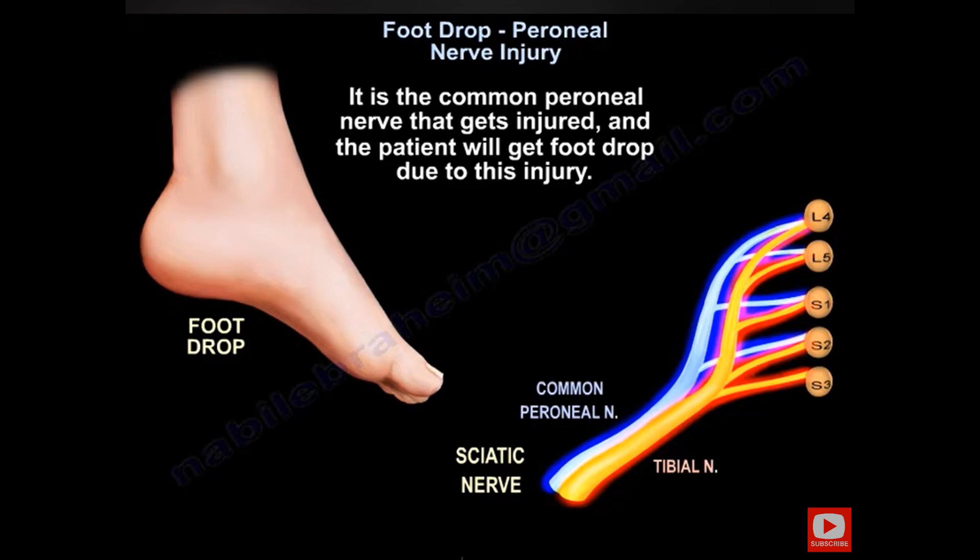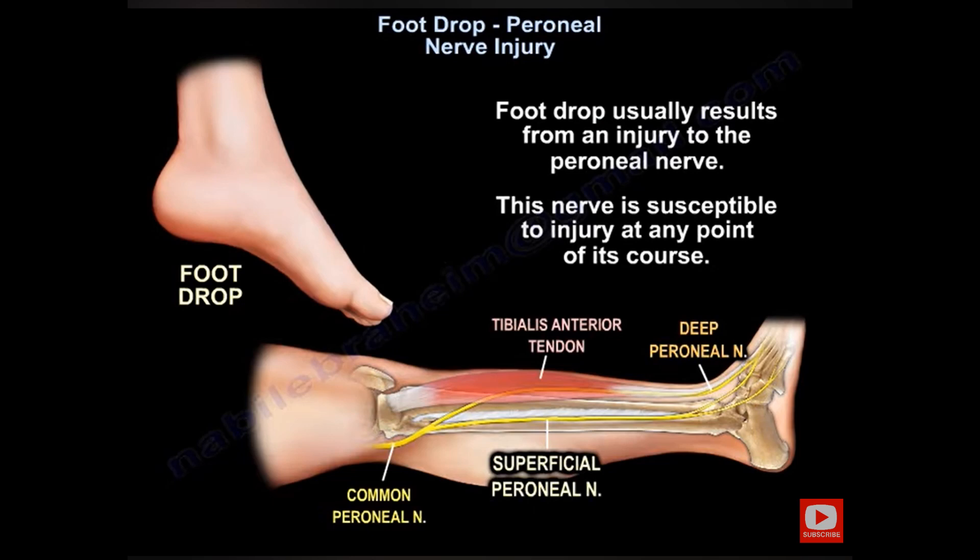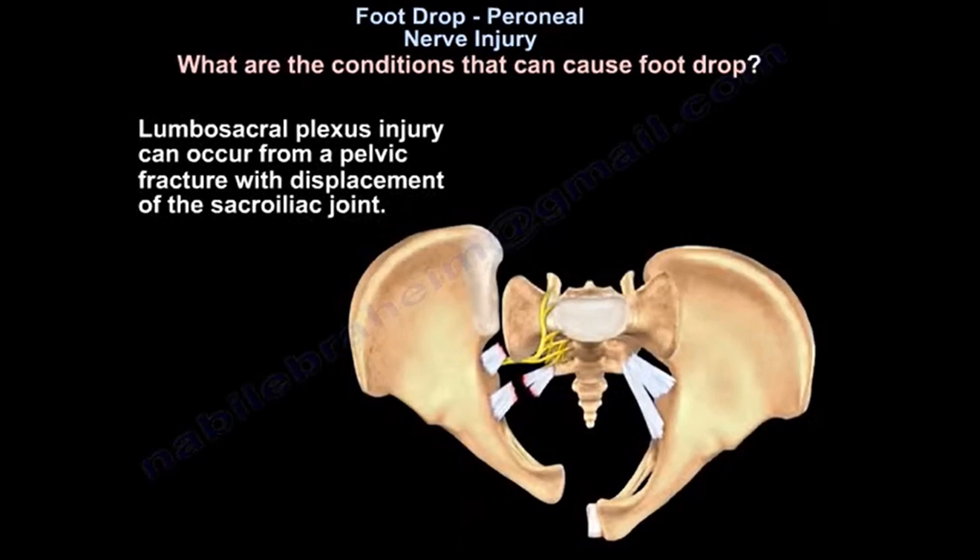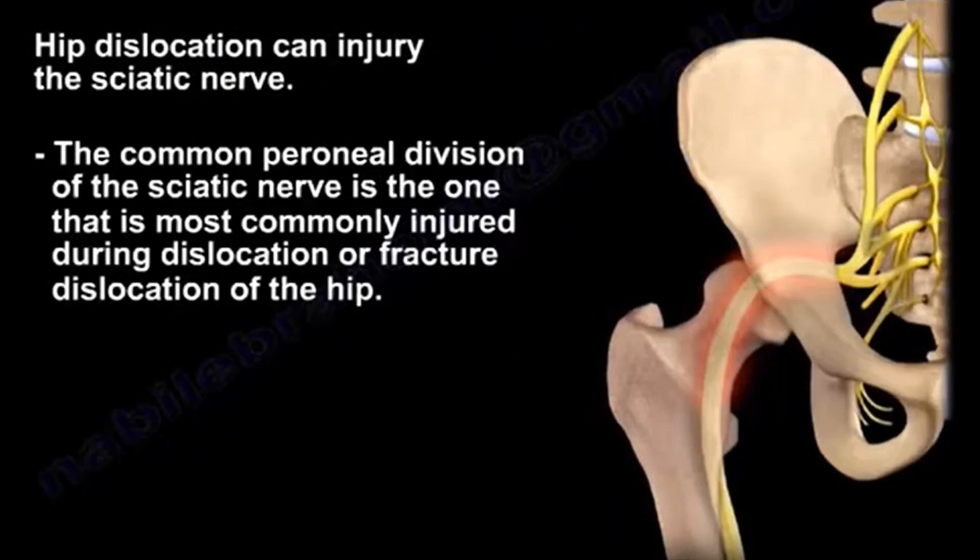The common peroneal nerve is the one that gets injured the most, and the patient will get foot drop from this injury. Foot drop can occur due to common peroneal nerve injury at any point of its course — from pelvic fracture, lumbosacral plexus injury, or hip dislocation.